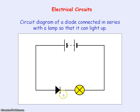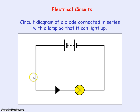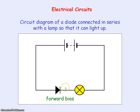The diode only allows current to flow through it in one direction, and the triangle indicates that direction. The triangle forms an arrow with the wires of the circuit, indicating the direction it will allow current to flow — from left to right — which is the same direction the current is coming from the battery. So this allows current to flow through the diode and hence through the lamp, so it lights up. We say that in this case the diode is connected in forward bias because it's allowing current to flow through it.